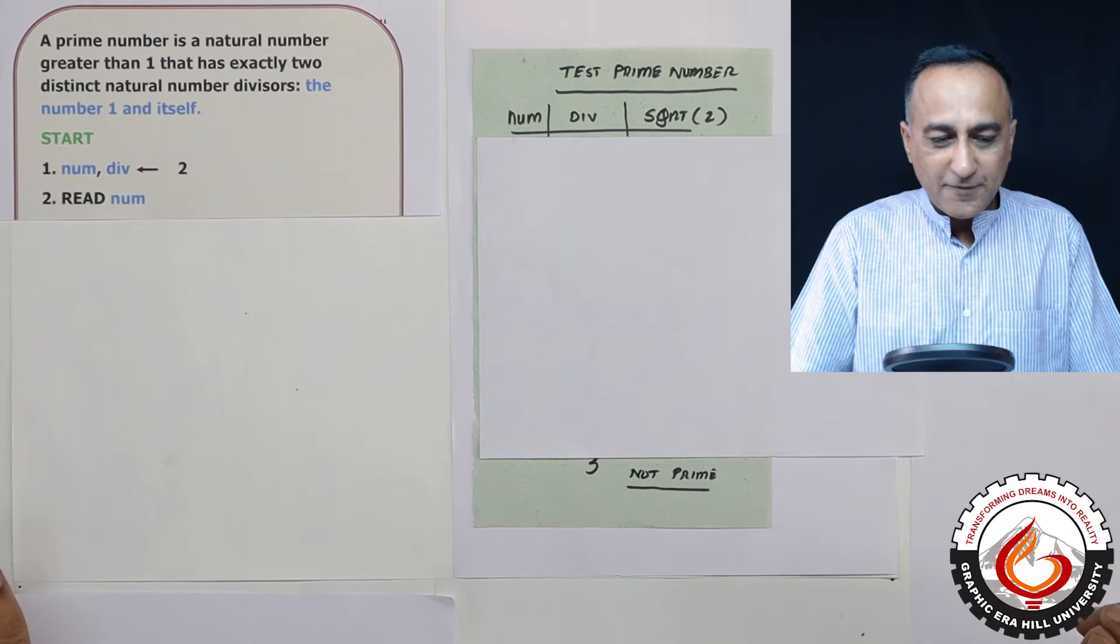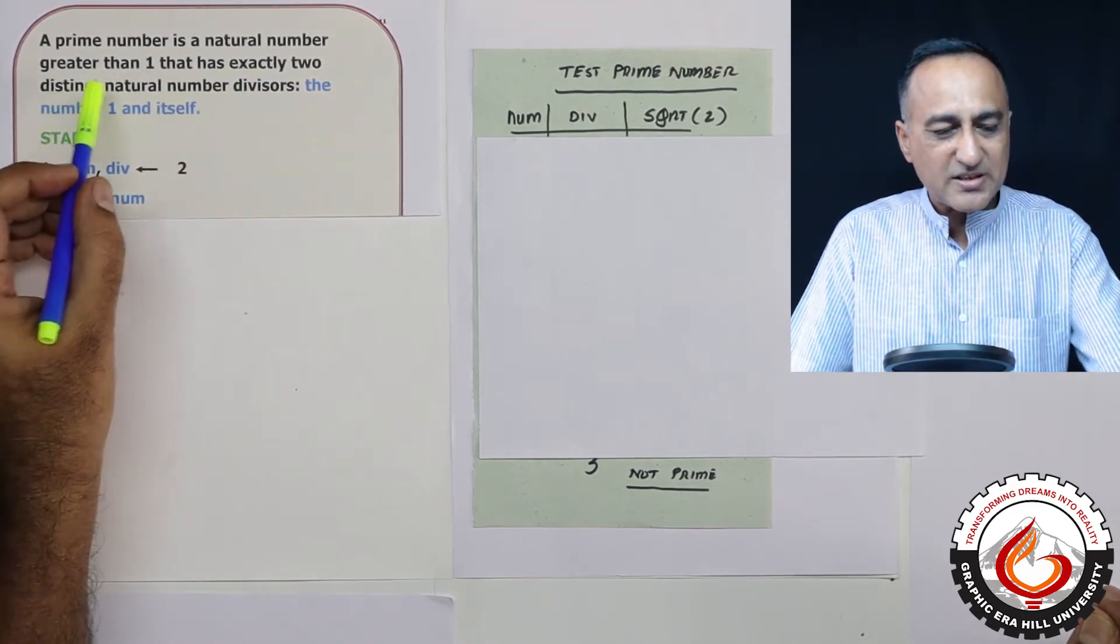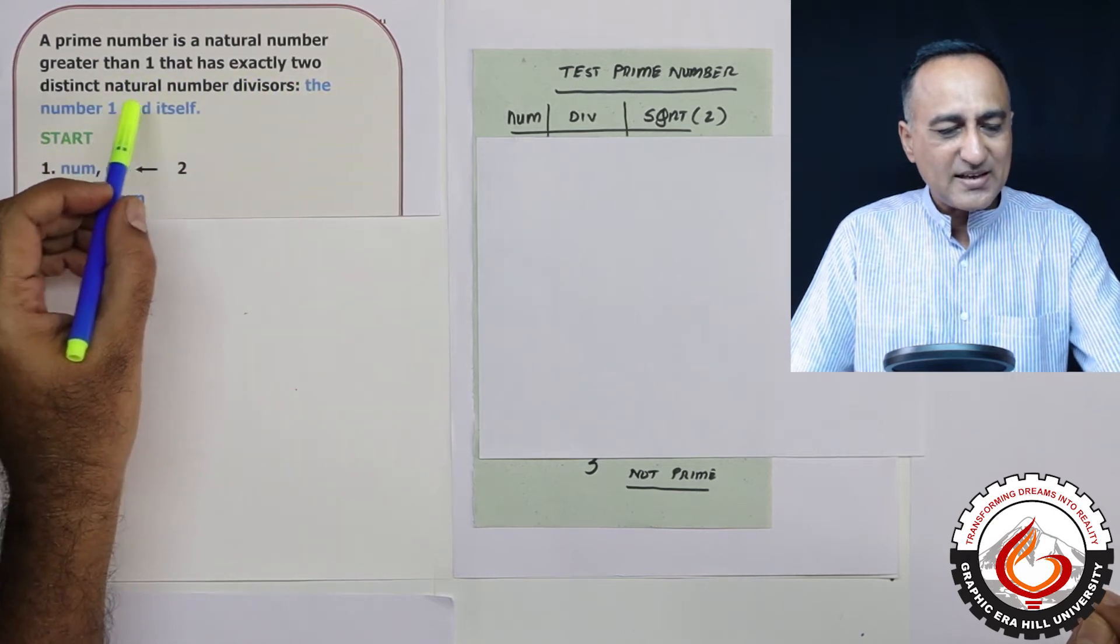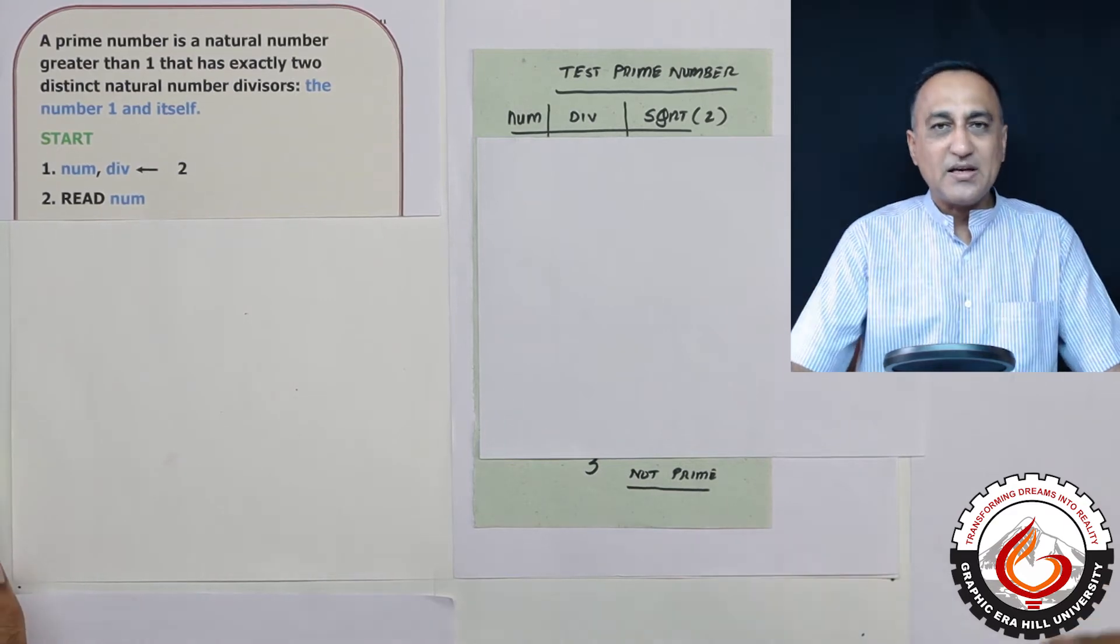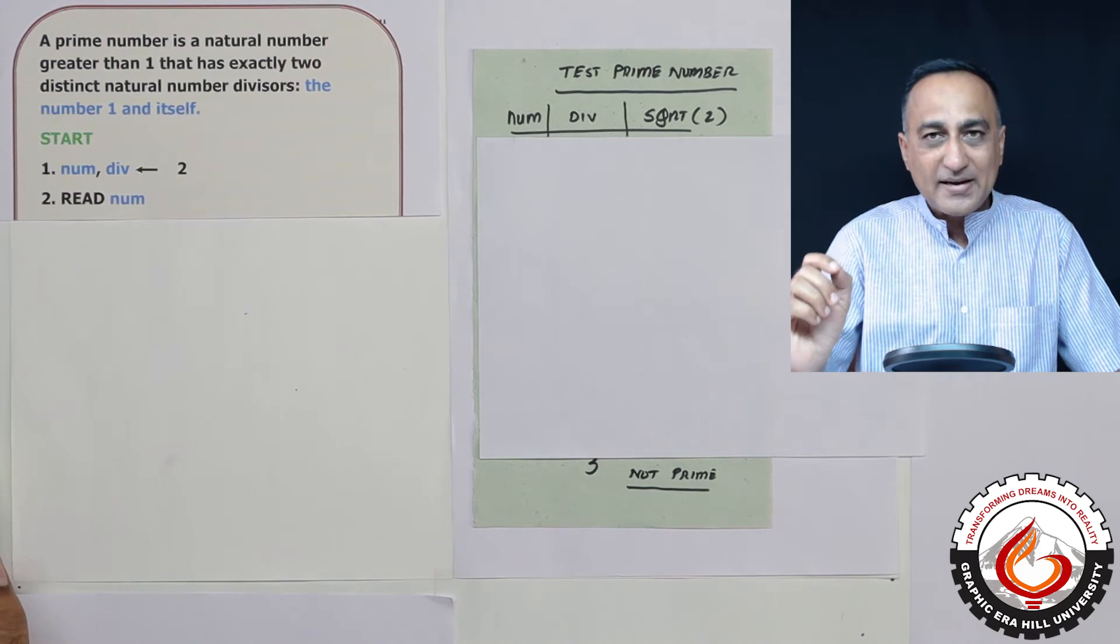Let's first clearly define and understand what is a prime number so that we are able to solve this particular problem. A prime number is a natural number which is greater than one and has exactly two distinct natural number divisors. What are those natural number divisors? The natural number divisors are the number one and itself.